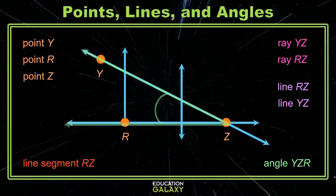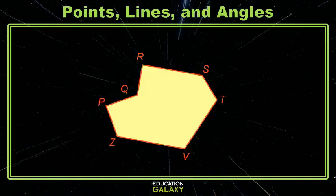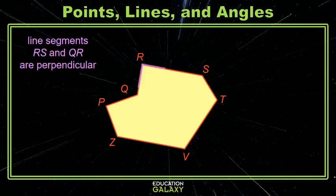Good job. Let's look at this figure and see if we can identify a set of perpendicular line segments. Remember, you're looking for something that looks like a corner. I see one — how about the line segments RS and QR? They are perpendicular.